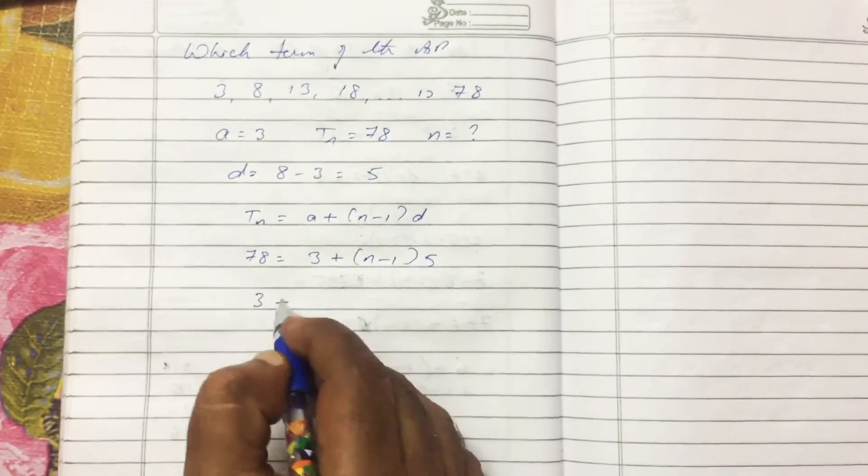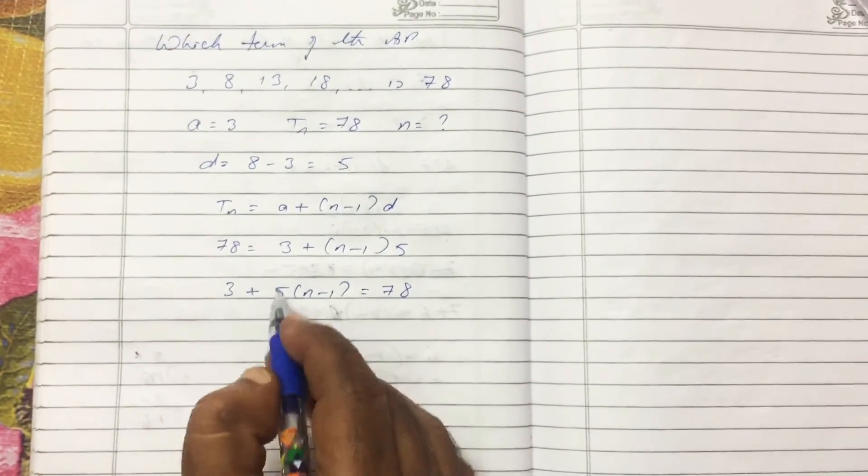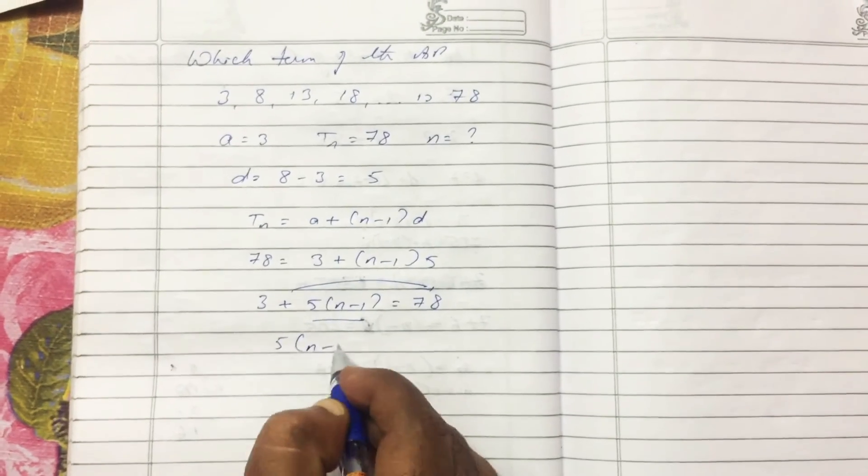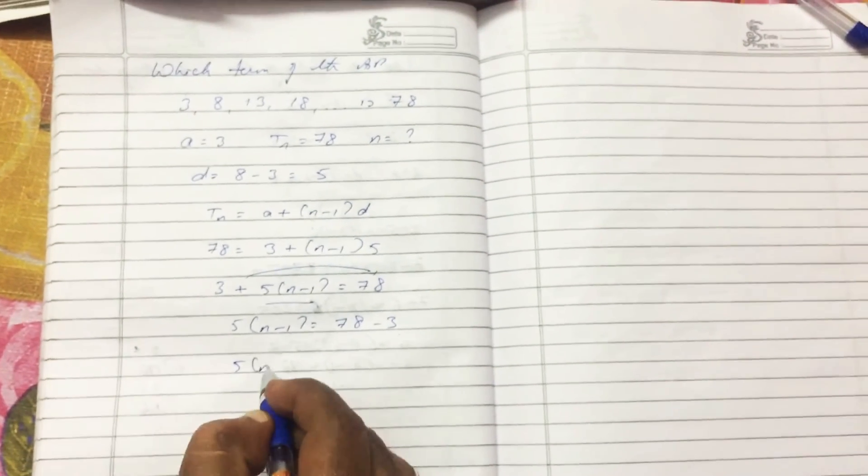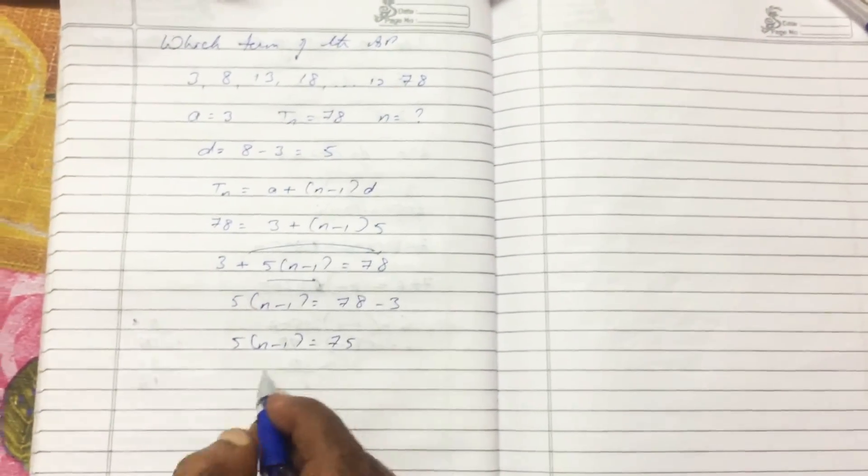So I rearrange it, 5 times (N minus 1) equals 78. Now I have to find this, transfer this one here: 5 times (N minus 1) equals 78 minus 3. 5 times (N minus 1) equals 78 minus 3 is 75.